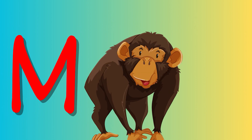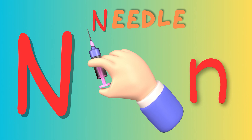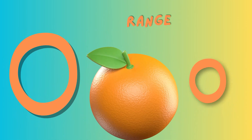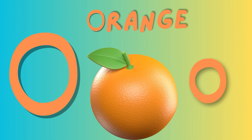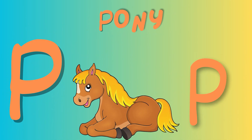M is for monkey. Monkey, monkey. This is the monkey. Monkey, monkey. N is for needle. Needle, needle. This is the needle. Needle, needle. O is for orange. Orange, orange. This is an orange.